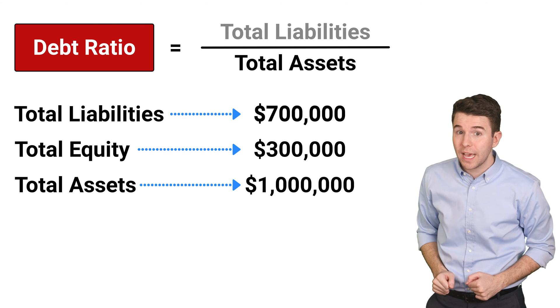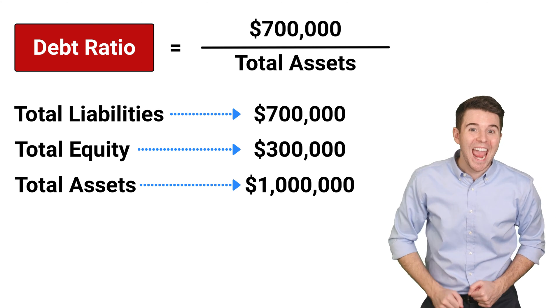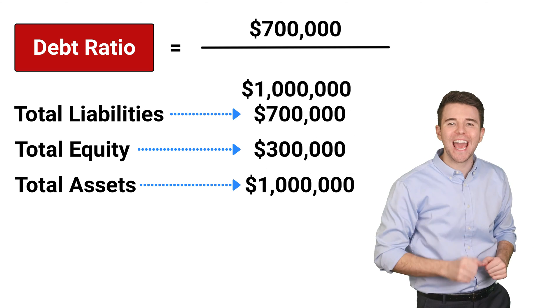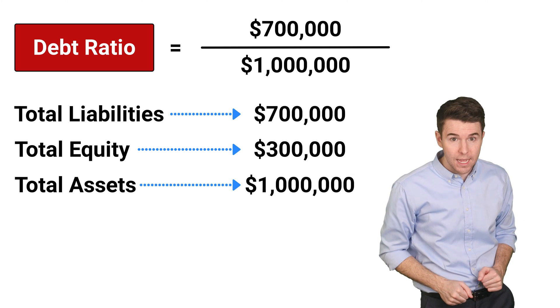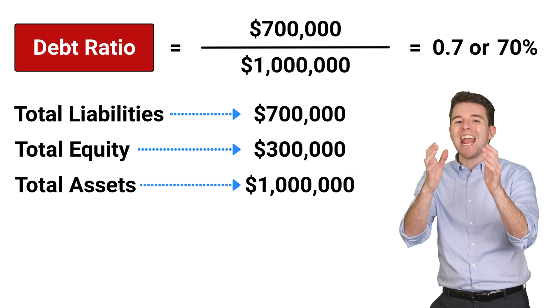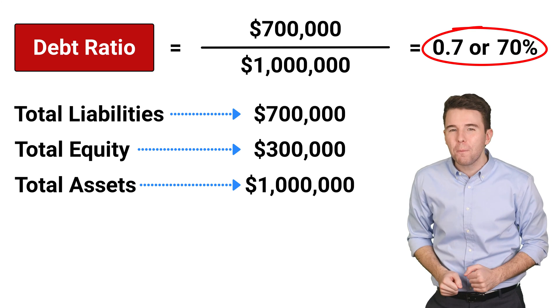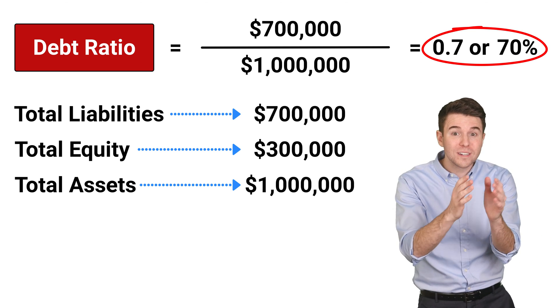To compute the Debt Ratio, we take total liabilities of $700,000 and divide by total assets of $1,000,000 to get a Debt Ratio of 0.7 or 70%.